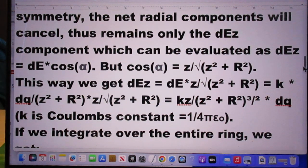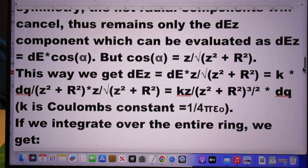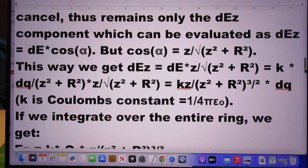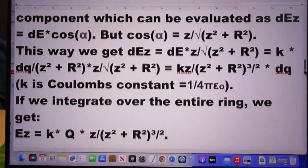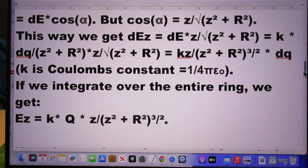DEZ is DE times the cosine of alpha. And now, Eugen tells you what the cosine of alpha is, but you can figure it out for yourself, making a little triangle.